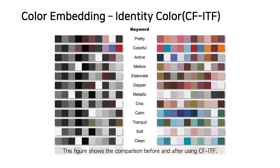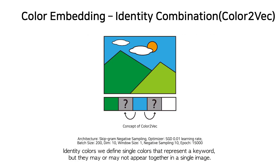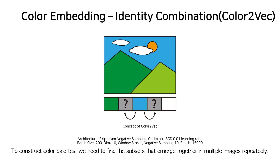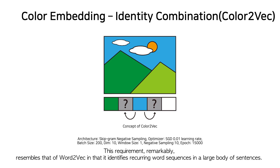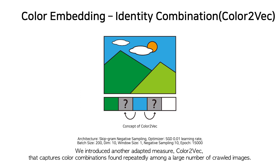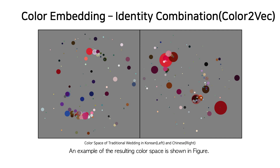This figure shows the comparison before and after using CF-IDF. Identity colors are single colors that represent a keyword, but they may or may not appear together in a single image. To construct color palettes, we need to find subsets that emerge together in multiple images repeatedly. This requirement resembles that of Word2Vec in identifying recurring word sequences in a large body of sentences. We introduce Color2Bag, which captures color combinations found repeatedly among a large number of crawled images.